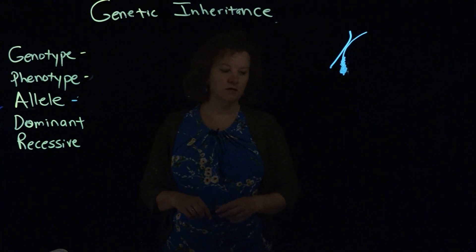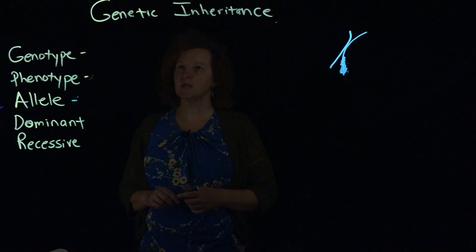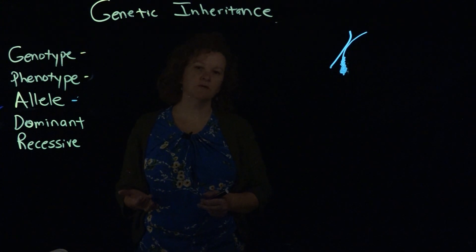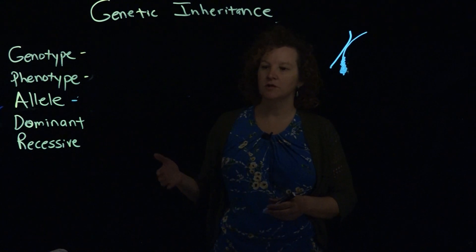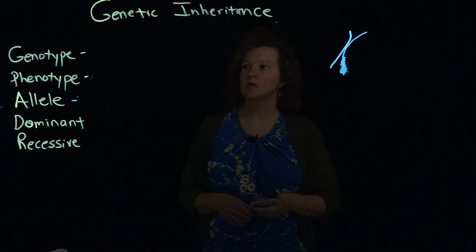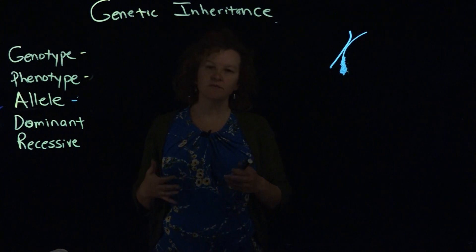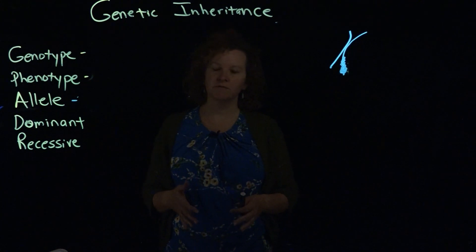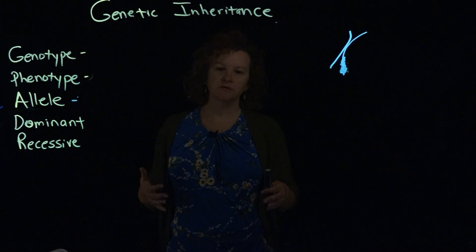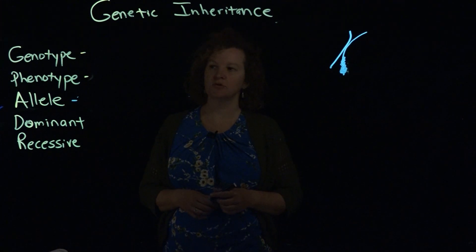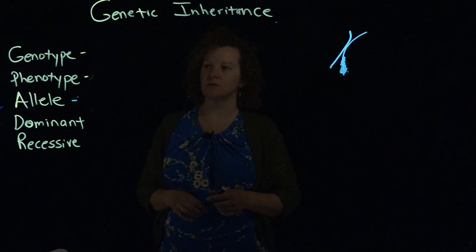Hi there and welcome to a video outlining genetic inheritance. Genetic inheritance is the way we track how traits are passed from individuals through the generations, through families. We can use a fairly simple letter system — although we're finding out it's a lot more complex than that — as a starting point to track the movement of genes and how they're inherited over time.